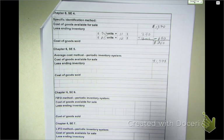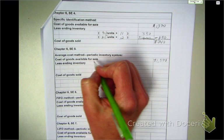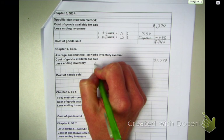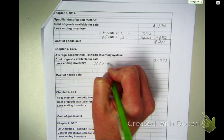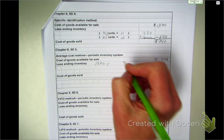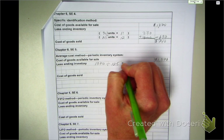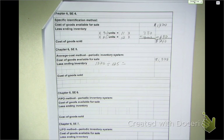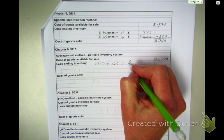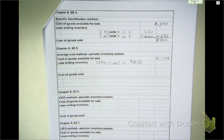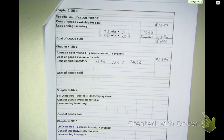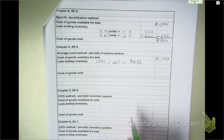How many units do I have available for sale? 125. So, 1370 divided by 125 gives me a unit cost of $10.96. Am I done? No. What do I have to take and apply that to?